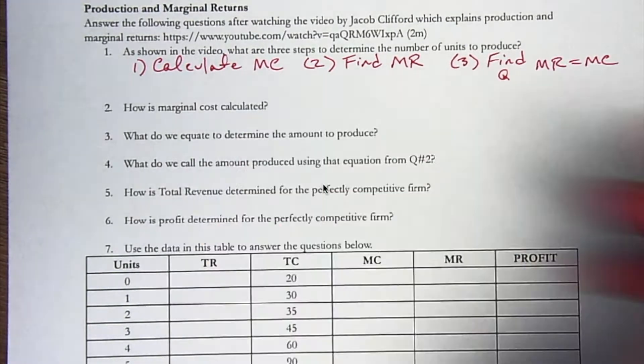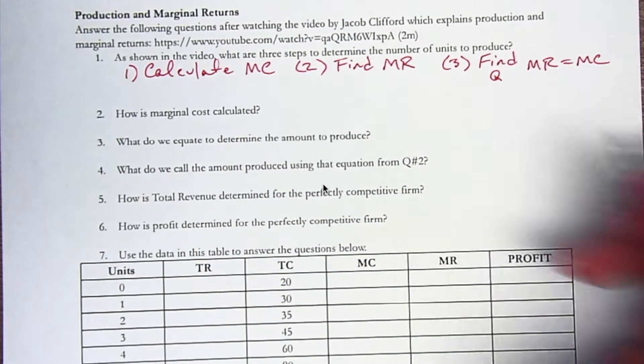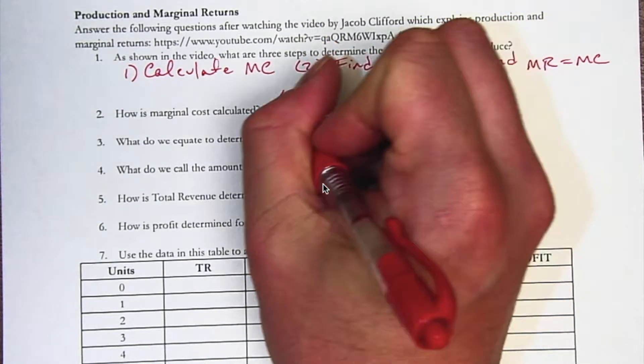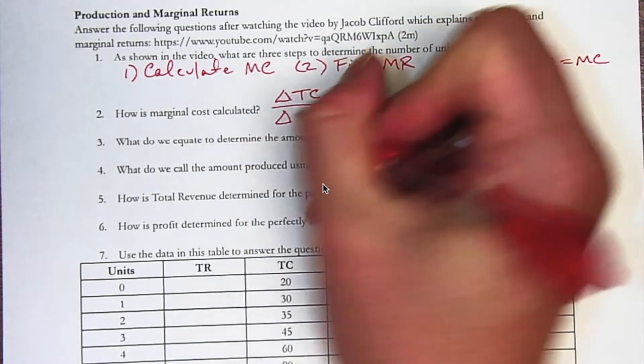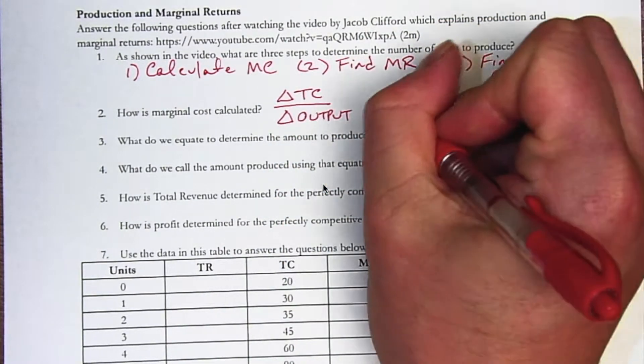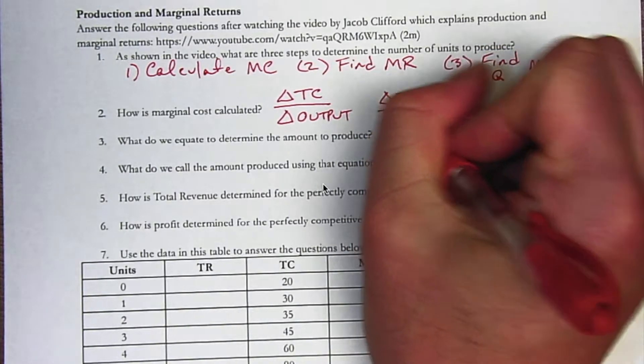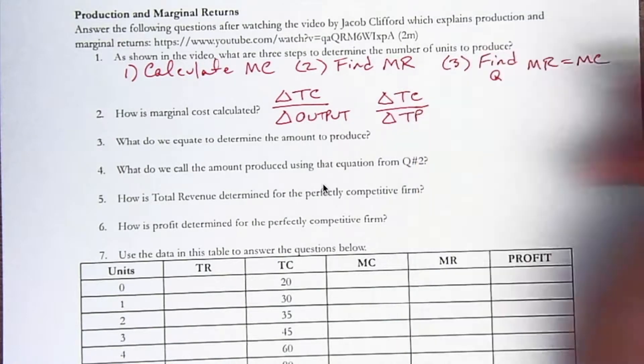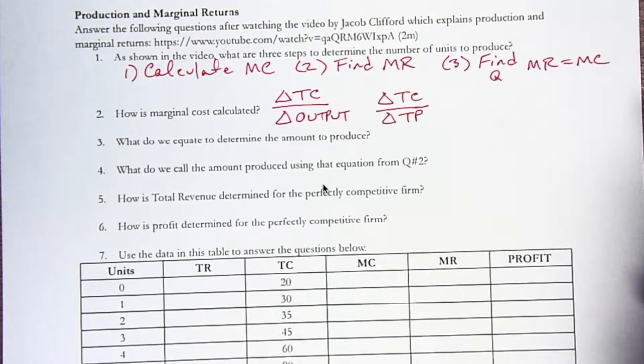So how is marginal cost calculated? Marginal cost is usually just calculated as the change in total cost divided by the change in output. We could also say the change in total cost divided by the change in total product. Those are basically the same thing.